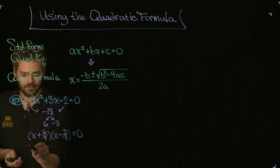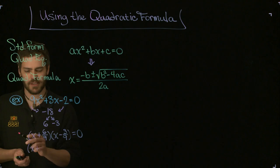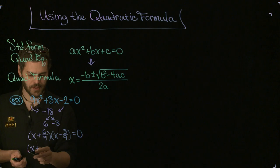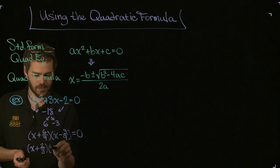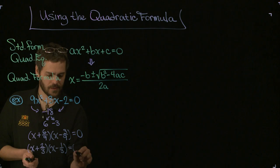I'm going to reduce these now. The 6 over the 9, let's reduce both of those by 3, so that's 2 and a 3. Over here, I'm going to reduce both of those by 3, so we get minus 1 third. That's equal to 0.